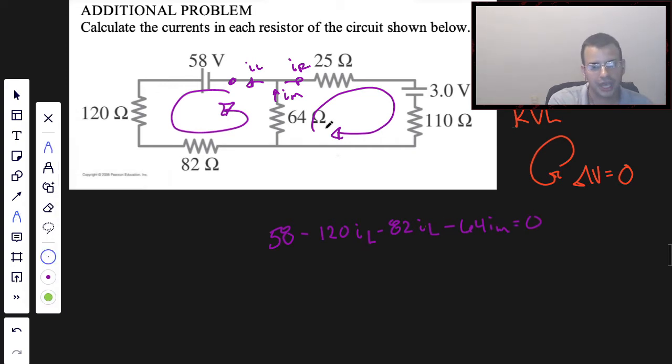Next loop, I'll start right here and go this way in the direction of the current. So we're going to have negative 3 because we're going through a battery backwards, minus 110 I right minus 64 I middle minus 25 I right again.